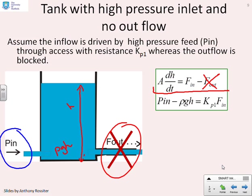What is the flow in? Well, the flow in is based a bit like a pipe. You'll see there's essentially a pipe down here. So we can use the pipe flow equation to represent the flow through that point. So we've got the difference in pressure between p in and the bottom of the tank. So that's p in minus ρgh, and that's going to be kp1 times f in. You'll see that's simply the pipe equation.